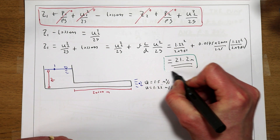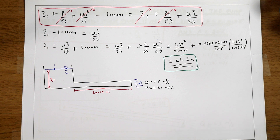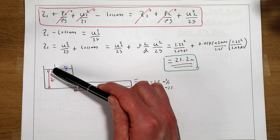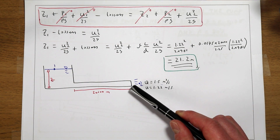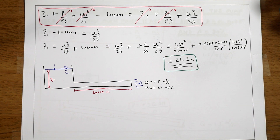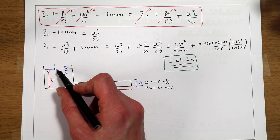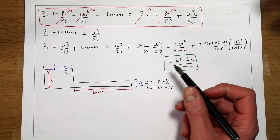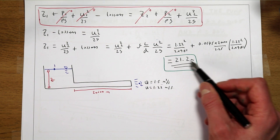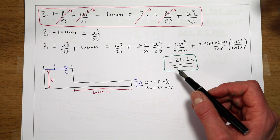So to fulfil our design brief, the elevation of the first reservoir would need to be 21.2 metres above where the outlet pipe discharges to the second reservoir. But the question tells us the actual elevation difference from the first reservoir surface to where the pipe discharges is only 5 metres, so we don't have nearly enough energy to drive this system by gravity alone.